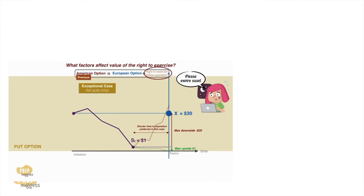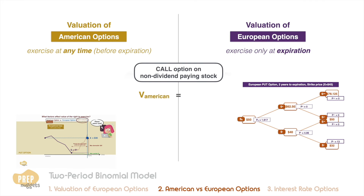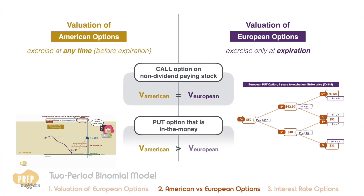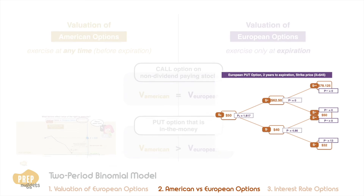To sum up: for a call option on a non-dividend paying stock, there is no difference in valuation between American and European call options — you should value the American call option as if it were a European call option. However, for put options there can be situations where the possibility of early exercise is of value to the option holder. For an American put option that is in the money, it may carry a significant premium over the equivalent European option.